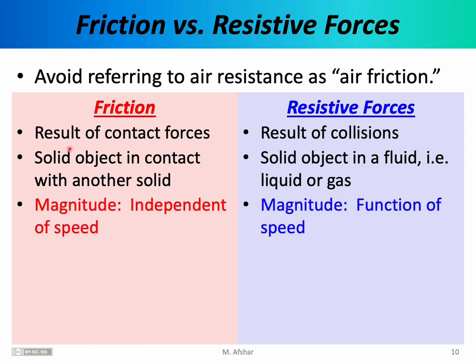Perhaps most importantly, the magnitude of friction is independent of speed, whereas the magnitude of resistive forces very much depends on speed. For the viscous force, it's a linear function of speed. For the drag force, it's a quadratic function of speed. Speed definitely matters: when an object goes twice as fast or three times as fast, the resistive force increases — that's not the case with friction.